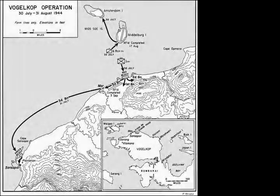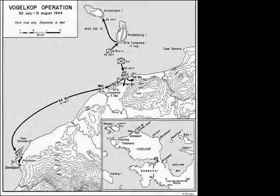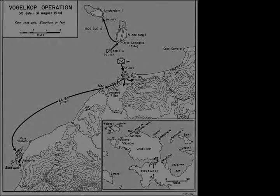Chapter 2 – Landing Force. On the 30th of July 1944, Operation Typhoon landed at Sandspur Mar, Middleburg Island and Amsterdam Island. In charge of the Operation Typhoon ground forces was Major General Franklin C. Sibbert, commanding general of the 6th Infantry Division.